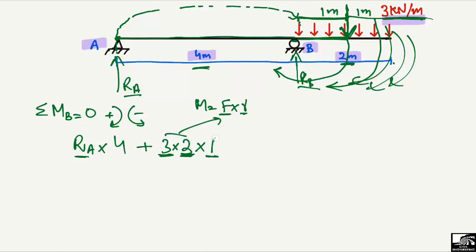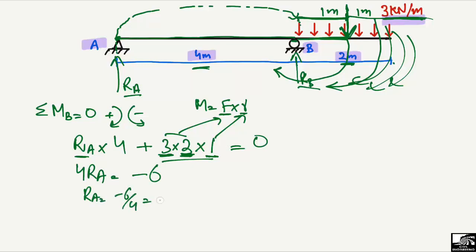Setting the summation of moments about B equal to zero: RA × 4 + 3 × 2 × 1 = 0. Simplifying, 4 RA = −6, so RA = −6/4 = −1.5 kilonewtons.